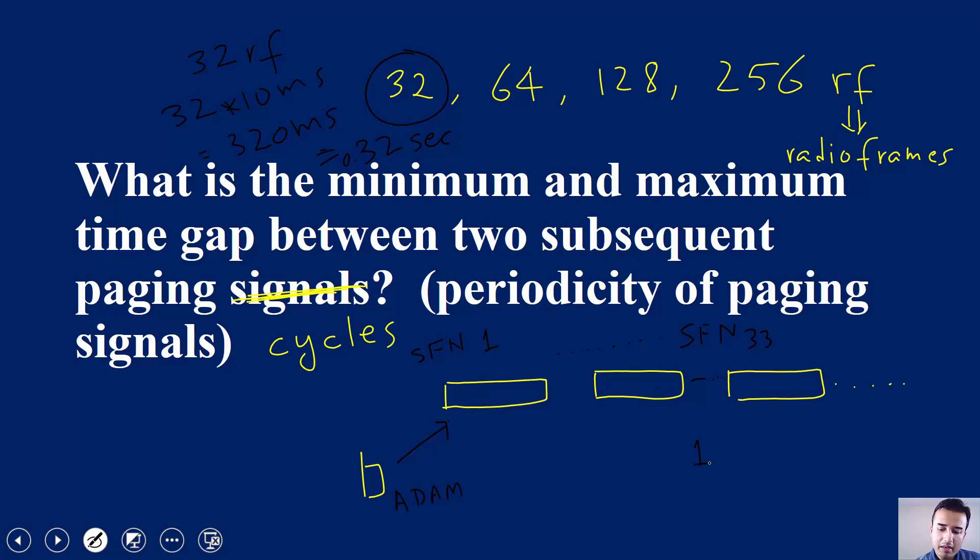Meaning second time it will wake up in that specific radio frame. And how much will be the difference? The difference will be it will wake up after every 320 milliseconds. The next time it will wake up is 33 plus 32 again, so on and so forth.